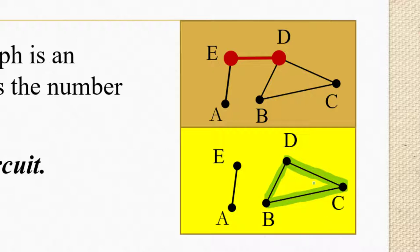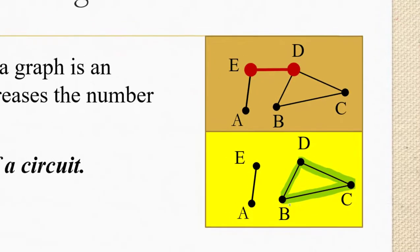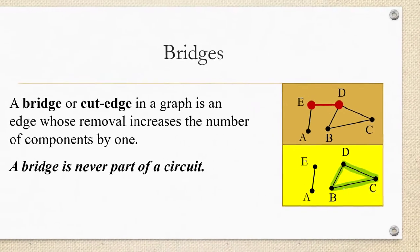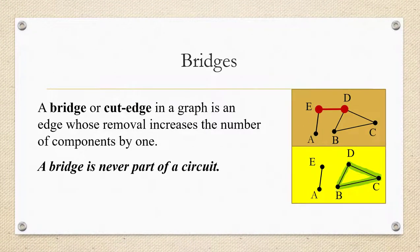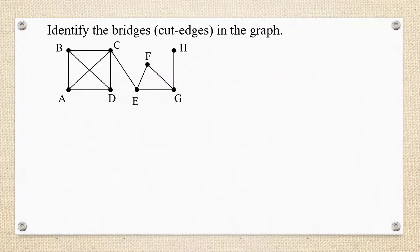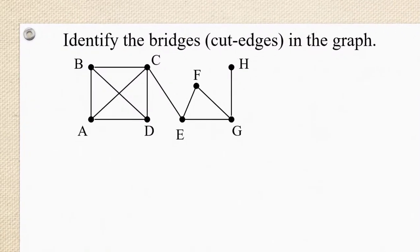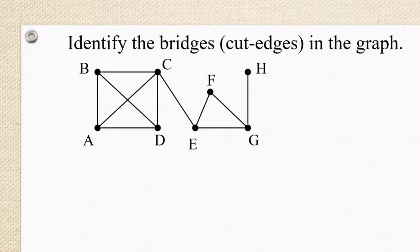So when you spot a triangle, a square, or any other structure that loops around, a bridge cannot be one of the edges in that circuit. So let's practice identifying the bridges or cut edges in a graph. The first thing I'm going to do is eliminate any edges as possibilities that are part of some kind of circuit. Notice that we have a square, A, B, C, D.